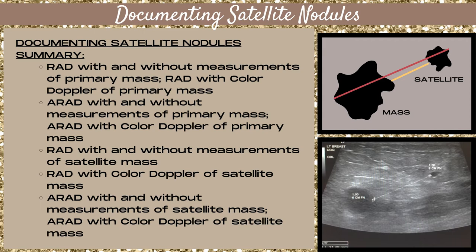Follow these same steps for each satellite mass. Take a radial image with and without measurements of your satellite mass, a radial color Doppler image of your satellite mass, an antiradial image of your satellite mass with and without measurements, and a color Doppler antiradial image of your satellite mass.